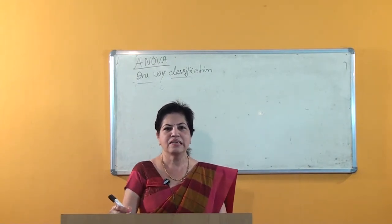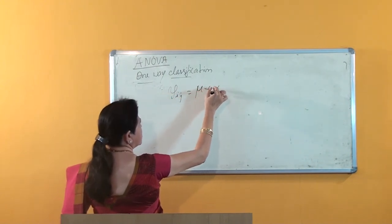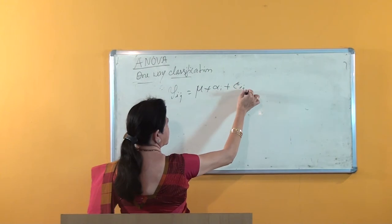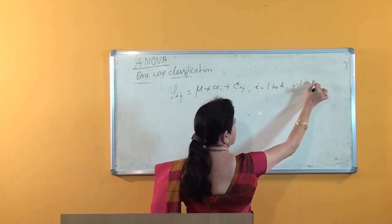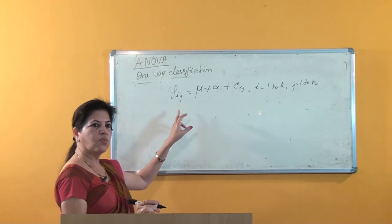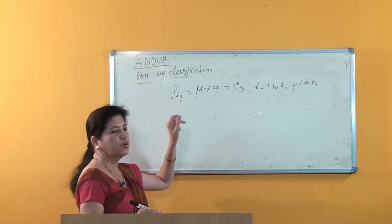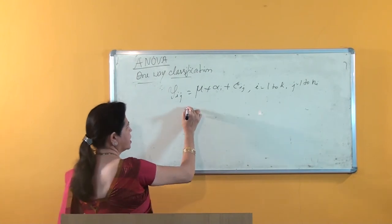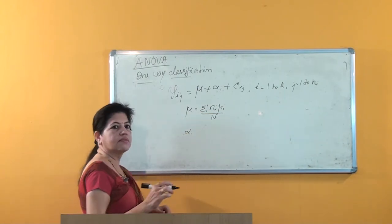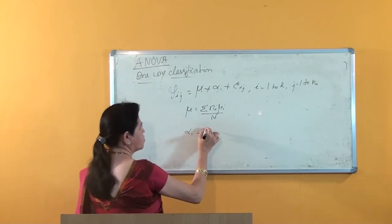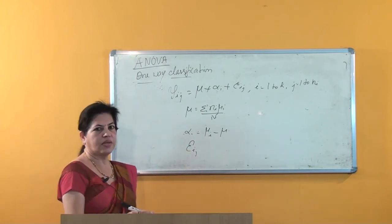The mathematical model considered in one-way classification is: y_ij = mu + alpha_i + epsilon_ij, where i = 1 to k and j = 1 to n_i. Here y_ij is the response of the j-th unit receiving the i-th treatment, mu is the general mean effect given by mu = summation(n_i * mu_i) / n, alpha_i is the effect due to the i-th treatment equal to mu_i minus mu, and epsilon_ij is the error effect due to chance.